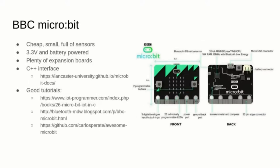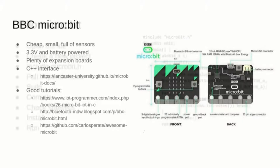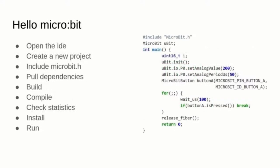The target platform for the following examples is the popular micro:bit board, which has a nicely defined C++ API from Lancaster University to access all its sensors, buttons, LEDs, and Bluetooth connection. Let's take a look at how to create a simple program using the online compiler.